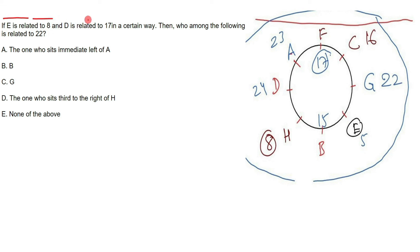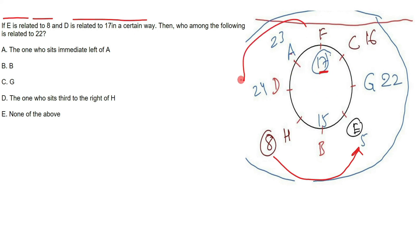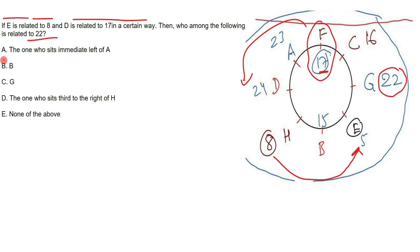Question 4: If E is related to 8 and D is related to 17 in a certain way, decode the pattern. E is the person sitting second to the right of 8. D is the person sitting second to the right of 17. Then who is related to 22? The person sitting second to the right of 22 is F. F sits in the immediate left of A. So the answer is option number A.